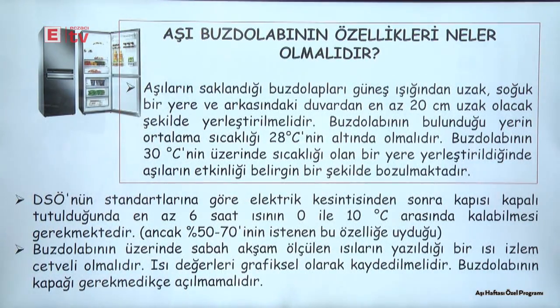Buzdolabına koyduğumuzda buzdolabının özellikleri nasıl olmalıdır? Buzdolablarının güneş ışığından uzak, soğuk bir yerde ve duvarla buzdolabı arasındaki mesafenin en az 20 cm olması gerekiyor. Buzdolabının bulunduğu yerin ortalama sıcaklığı 28 derecenin altında olmalıdır; çünkü 30 derecenin üstündeki ortam aşıların bozulmasını etkilemektedir. Kapağın sık sık açılıp kapanmaması gerekiyor; bu durum buzdolabı içerisindeki ısının yükselmesine ve aşıların bozulmasına neden oluyor.